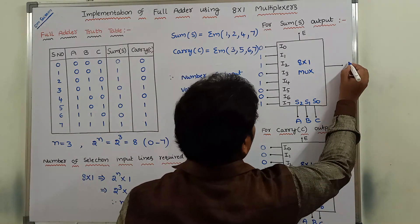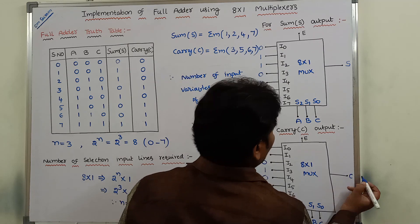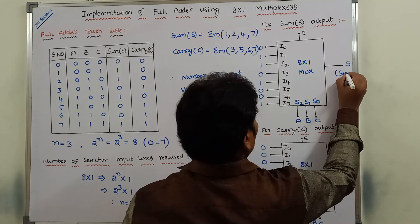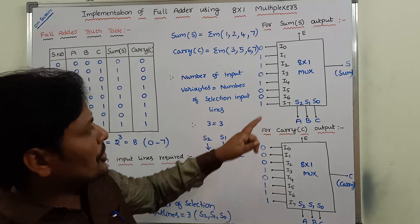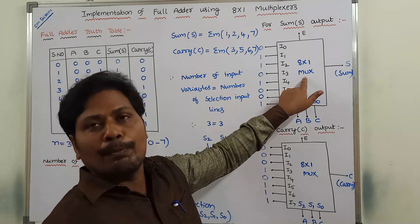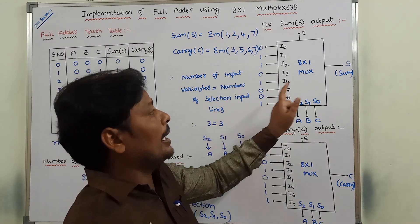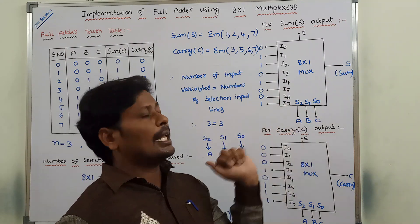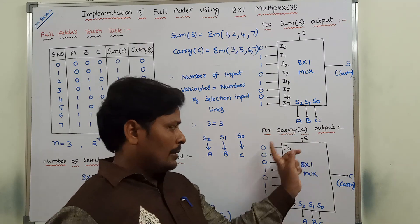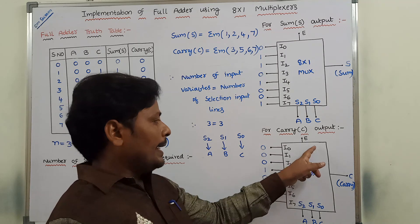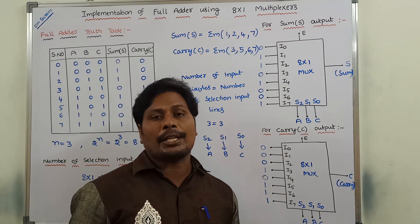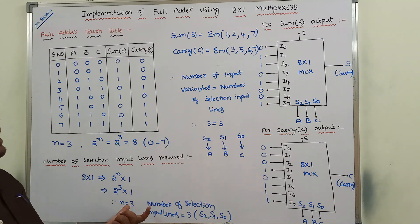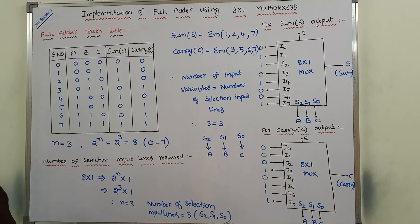The output variable for the first MUX is written as S (sum output), and for the second MUX it is written as C (carry output). Observe this diagram: the 8 by 1 multiplexer takes 8 inputs and produces sum output using 3 selection inputs. The second circuit diagram takes 8 inputs and produces 1 output — that is carry output — using 3 selection lines. In this way, we implement the full adder using 8 by 1 multiplexer.